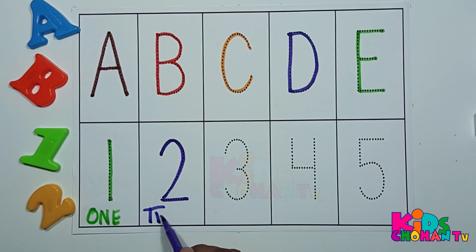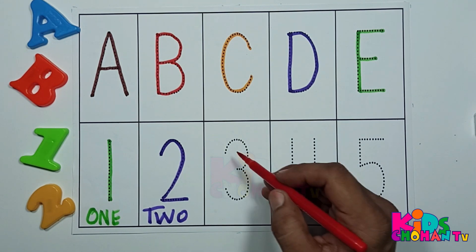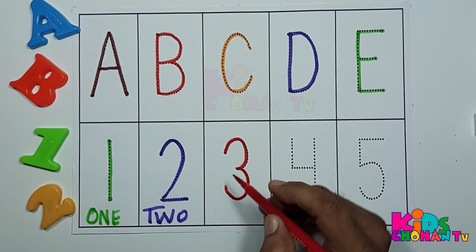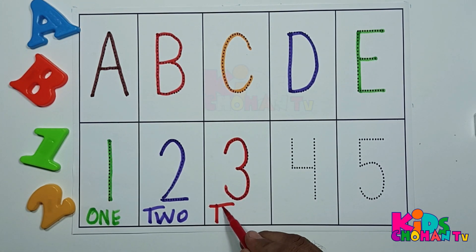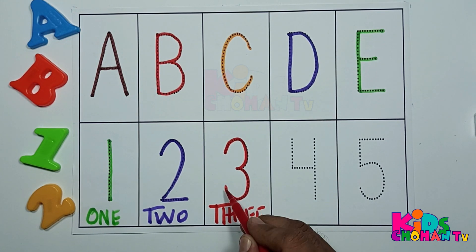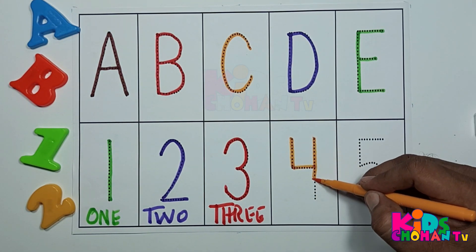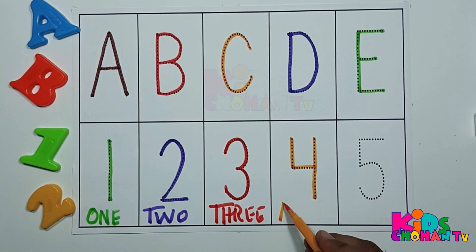Number two: T-W-O, two. Number three: T-H-R-E-E, three.